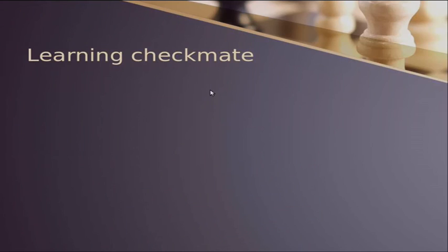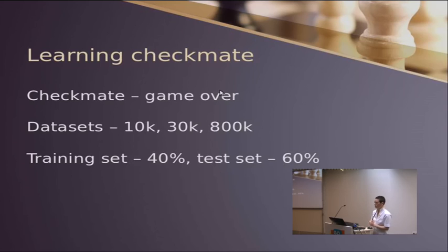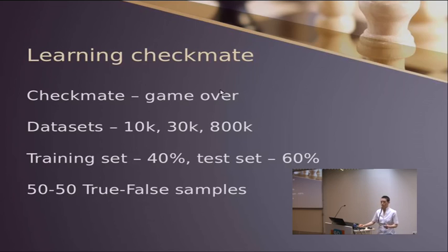Here we ask given state of a board, is it a checkmate or not? We're not asking whether, if it is a checkmate, who won - the black or the white. We might be asking that in the future. We used several datasets: 10K, 30K, 800K. The training set, we used 40% for training, 60% for testing. And we had 50-50 of true and false samples. Of course, the real distribution of the real probability is much less, because you only have one checkmate at most at each game, maybe less.